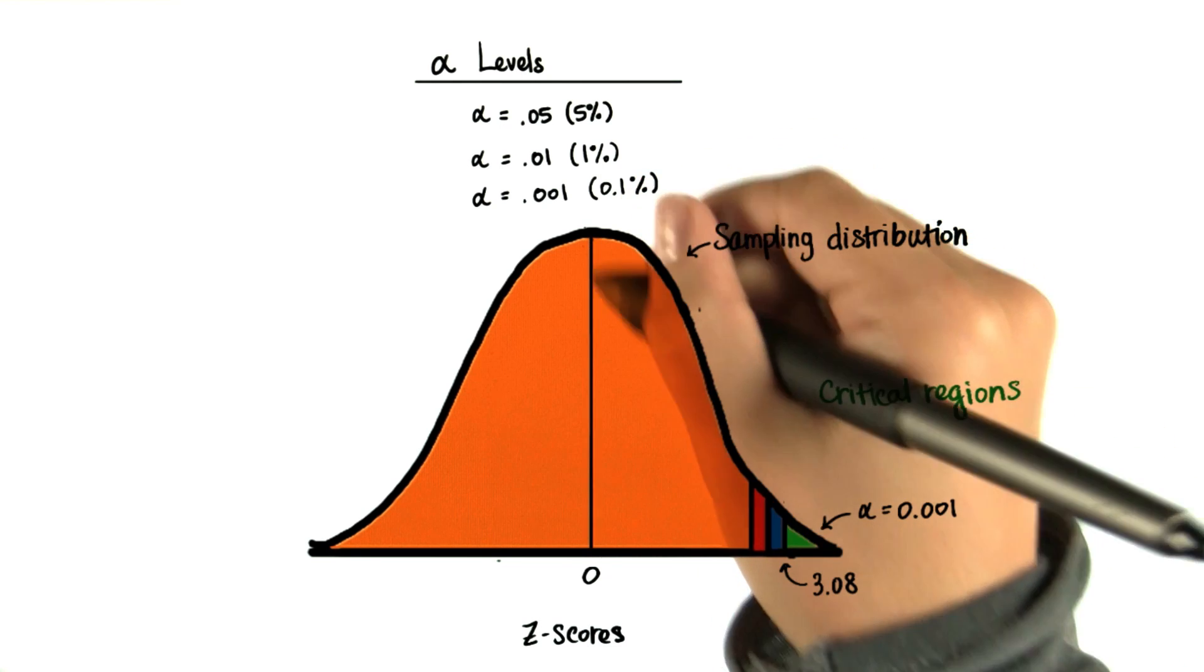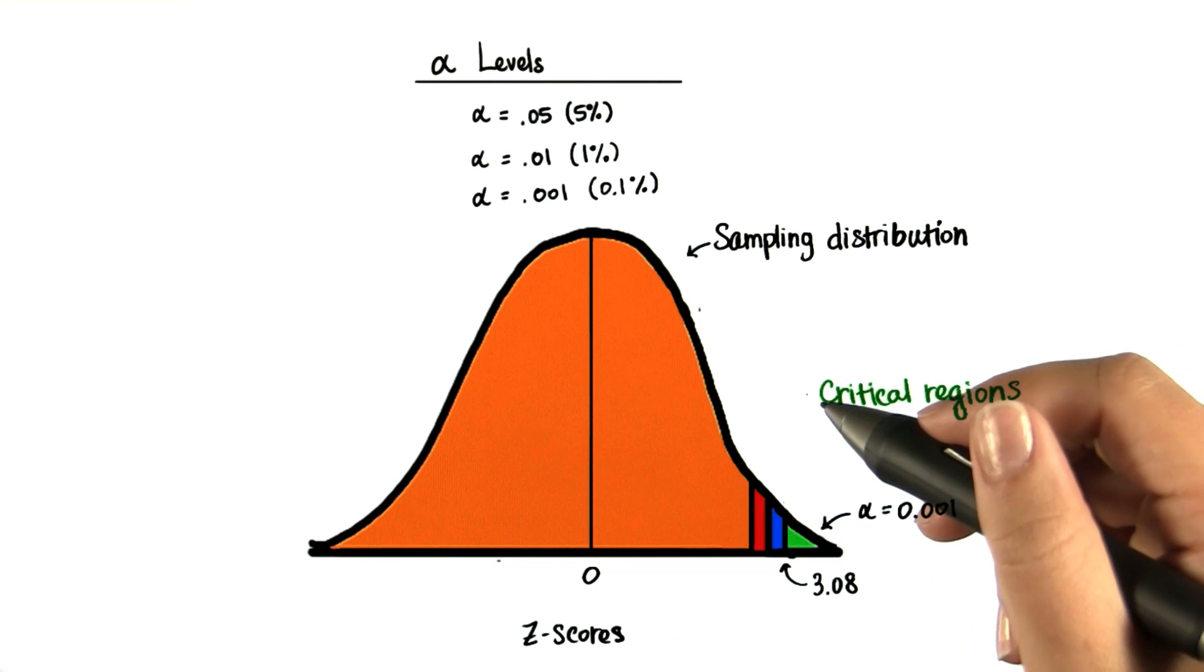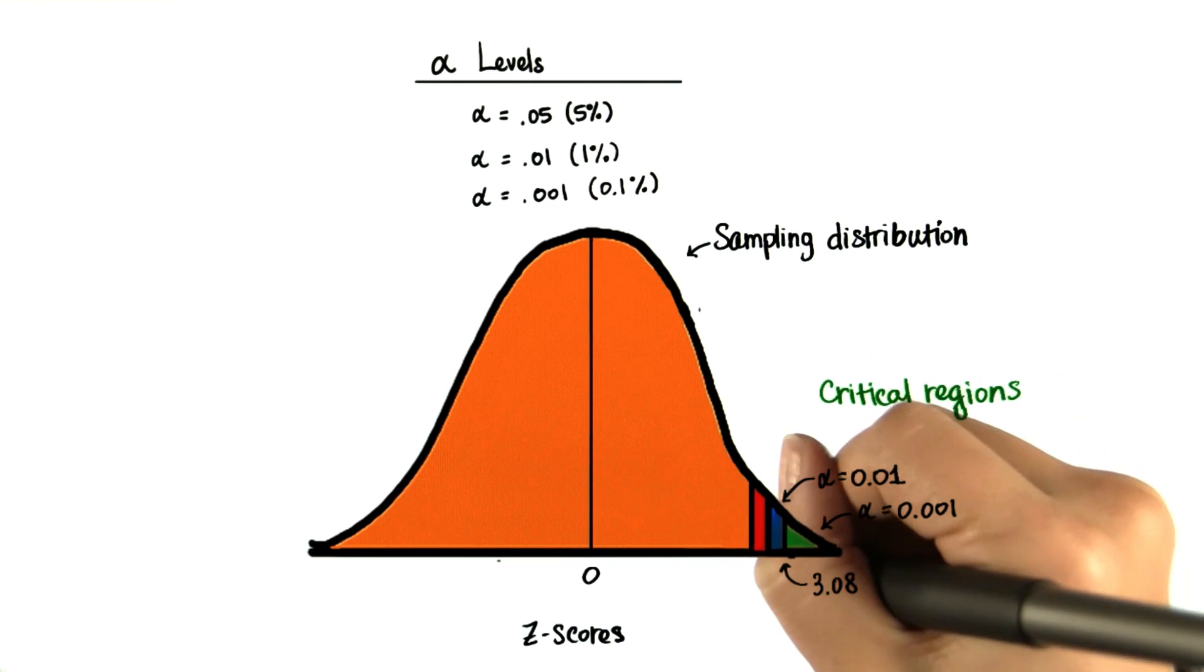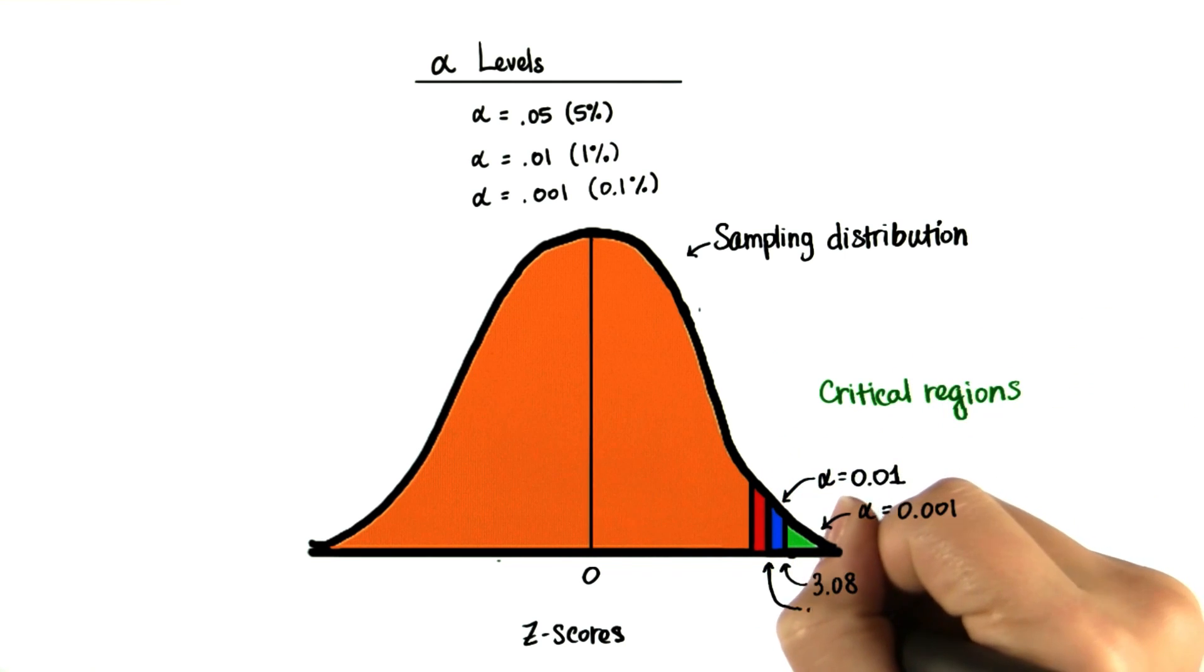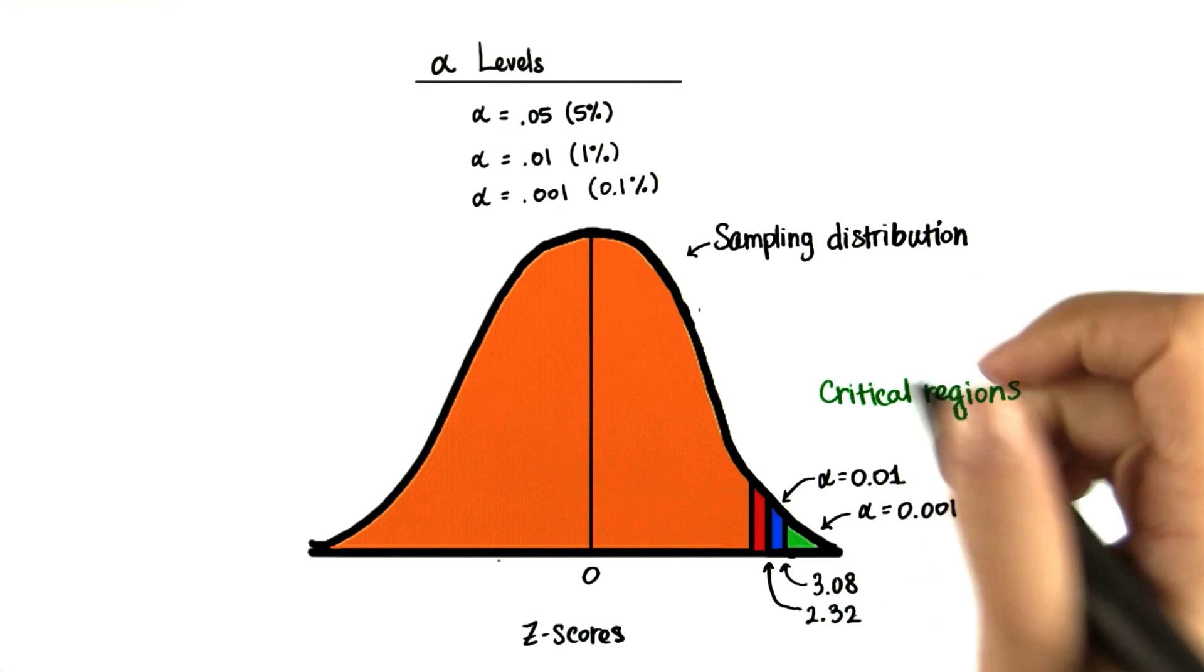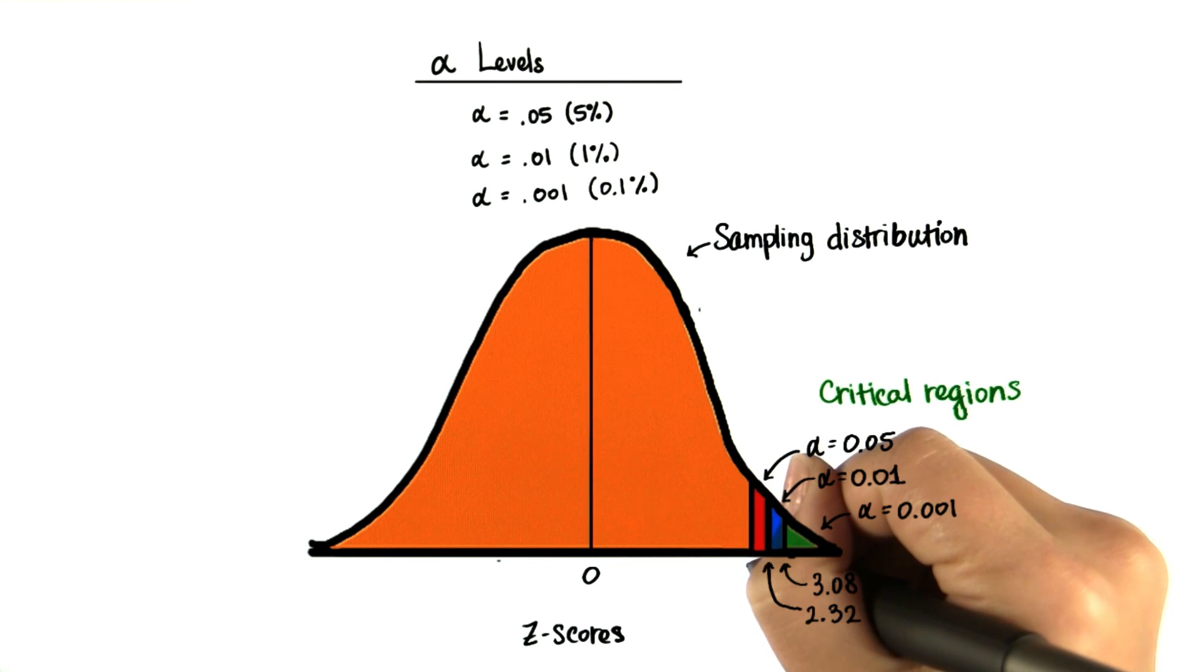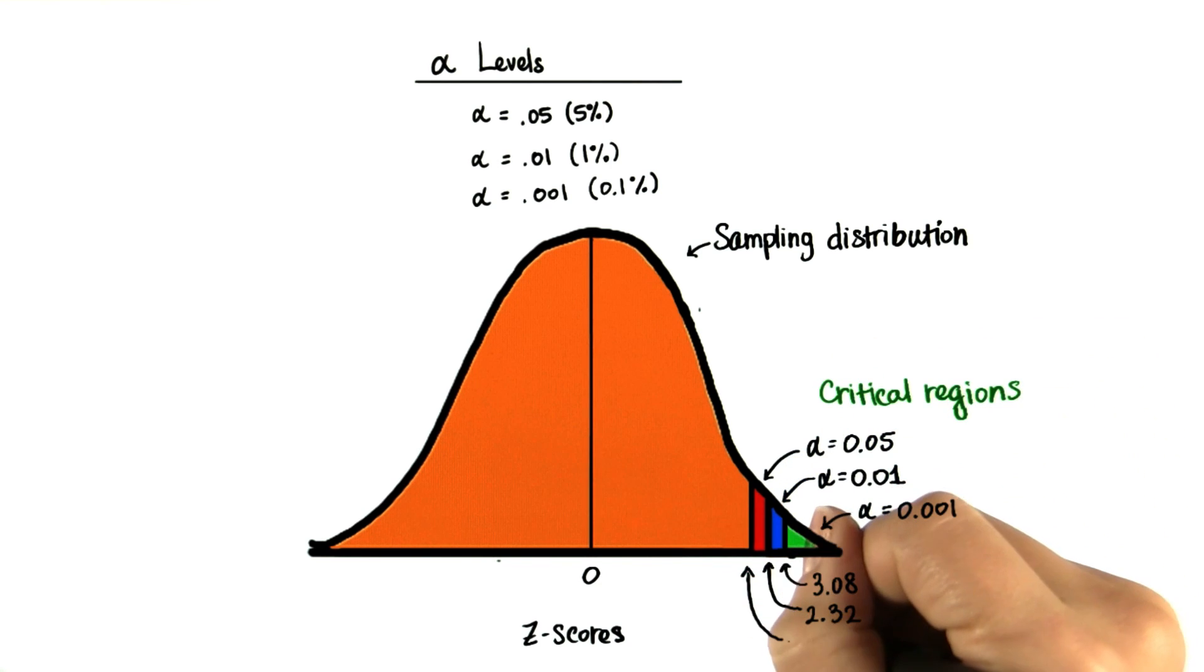And remember that the middle of the distribution, the mean, has a z-score of 0. Then our second smallest critical region is 0.01, so that's the probability of being greater than this value, which you found was about 2.32. And then our biggest critical region is 0.05, so that's the probability greater than a z-score of 1.65.